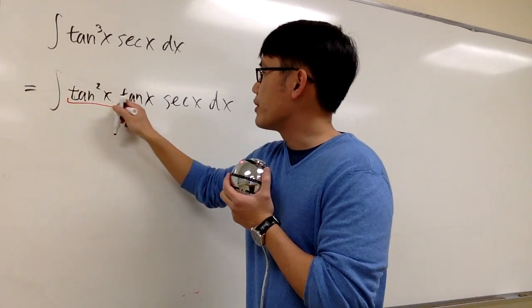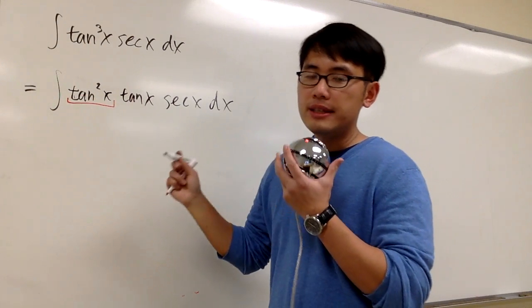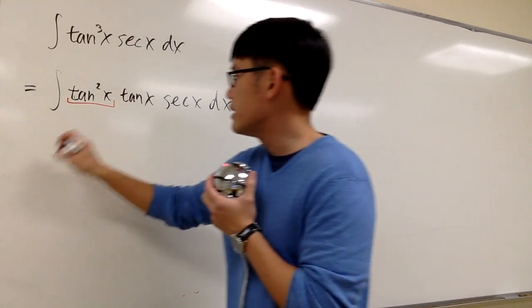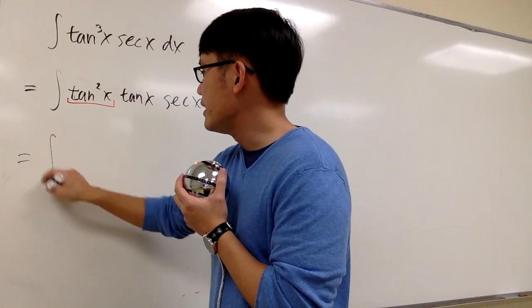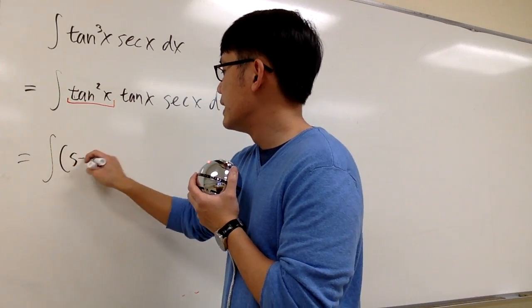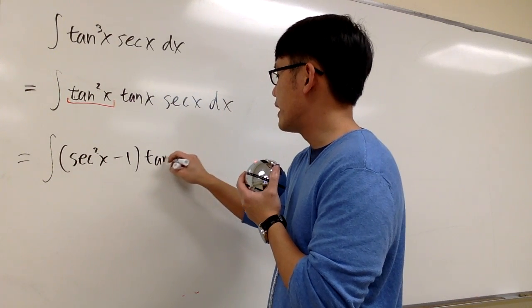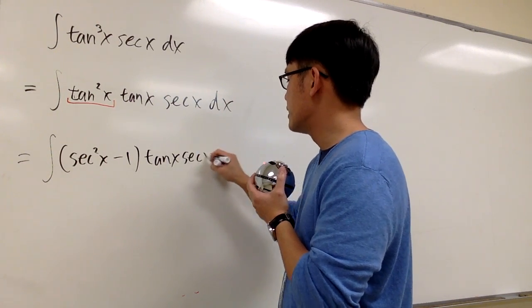And then for the tangent squared x right here, tangent squared is the same as secant squared minus 1. And now let's make a replacement. This is the same as the integral of secant squared x minus 1, and then we have tangent x, secant x on the outside.